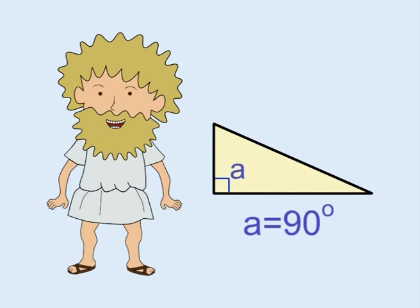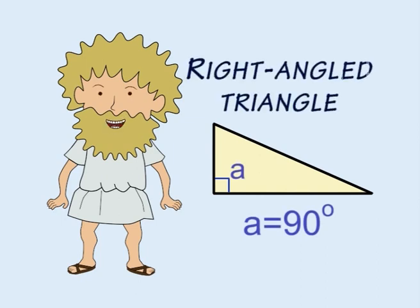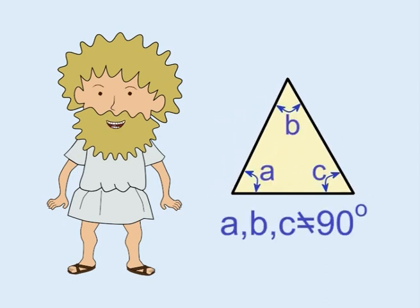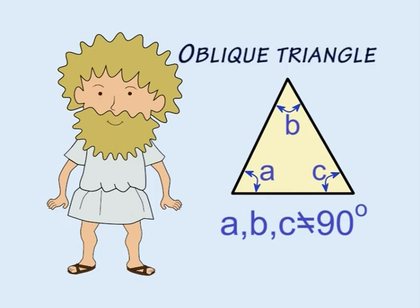And a triangle with one internal angle equal to 90 degrees is a right angle triangle. A triangle that doesn't have a 90 degree internal angle is an oblique triangle.